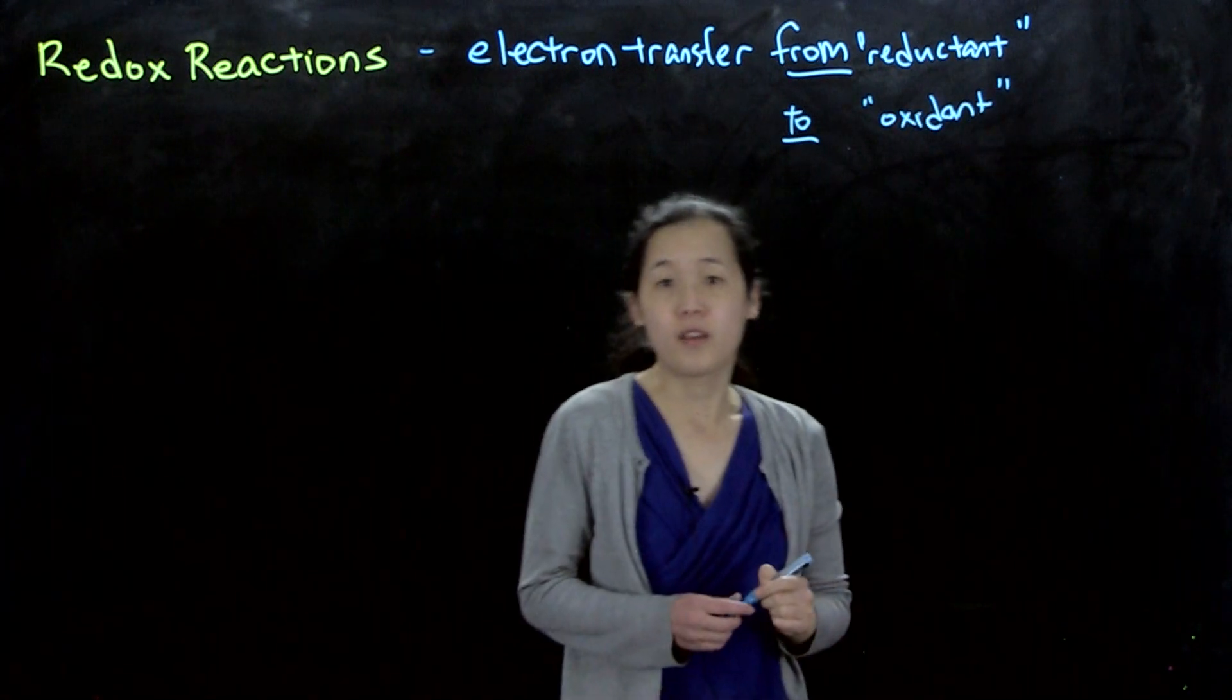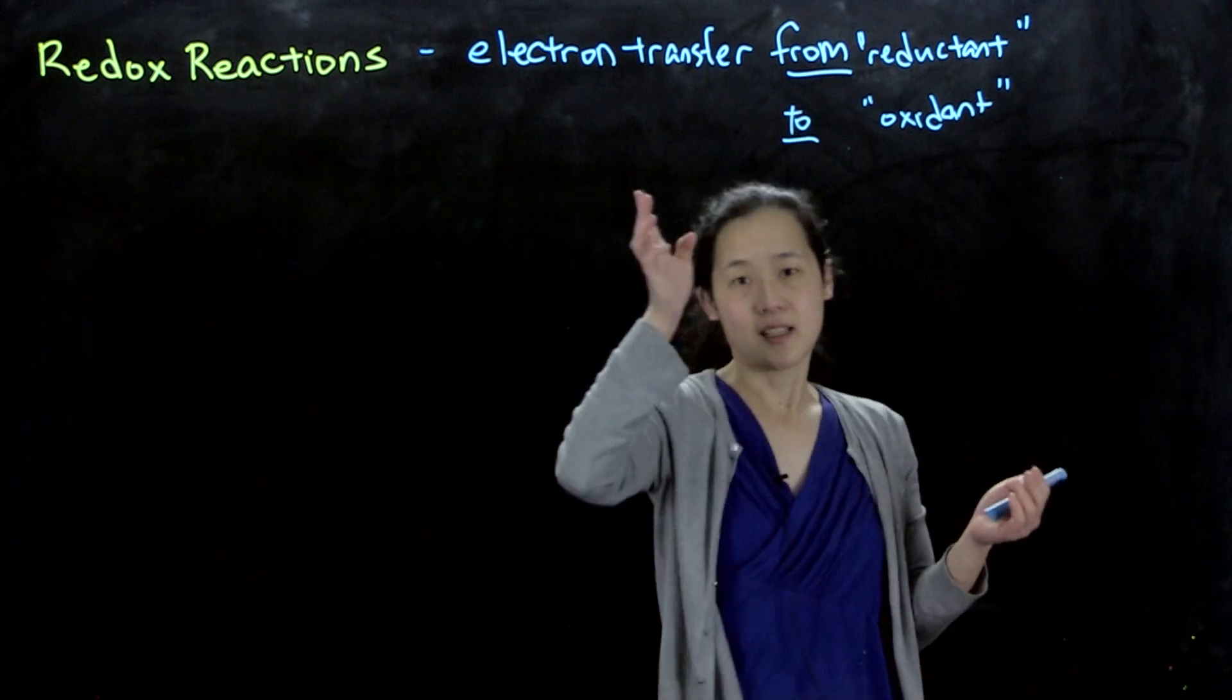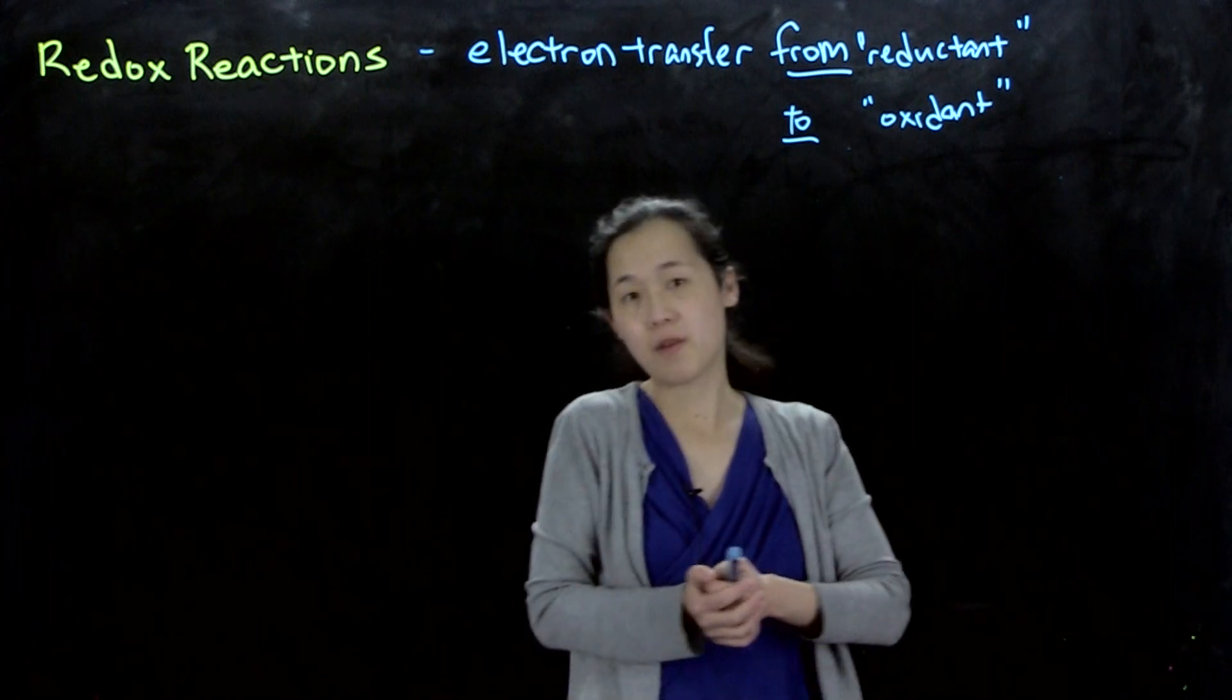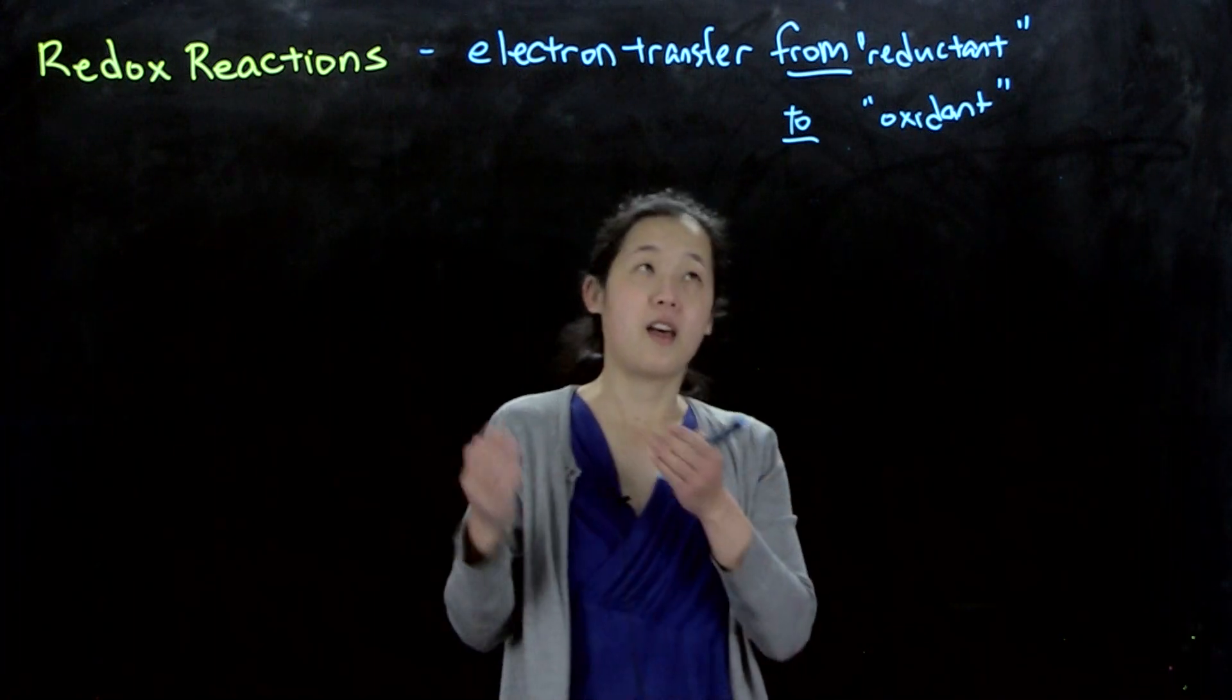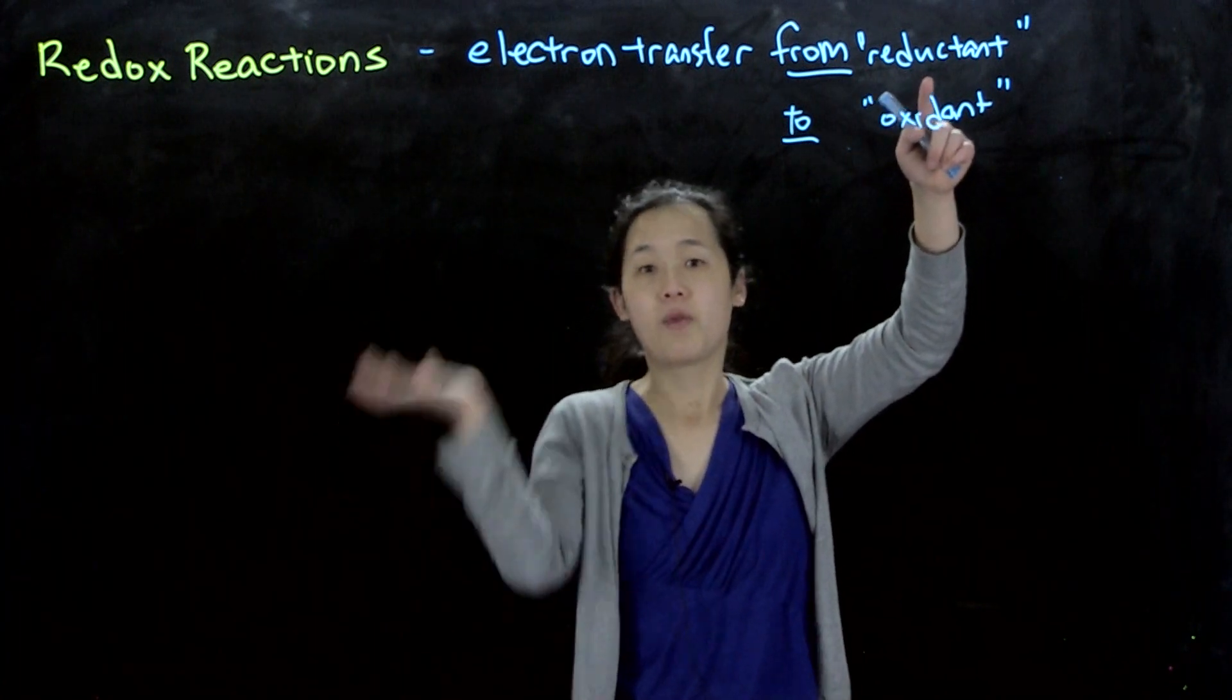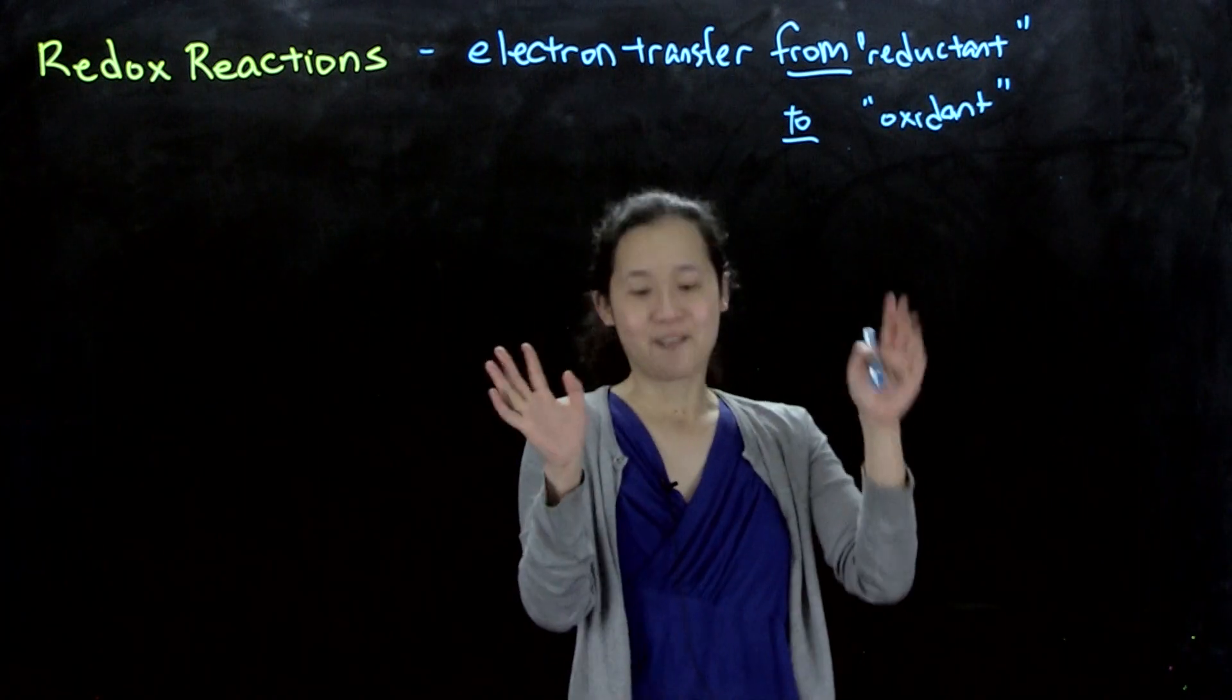Right, so the oxidant is getting reduced, it's gaining electrons, and the reductant is getting oxidized, it's losing electrons. You might hear some acronyms, one common one is Leo the lion says ger. Losing electron is oxidation, and gaining electron is reduction. So the reductant wants to give away its electron to get oxidized, so this is performing the action of reducing something. Don't get confused.